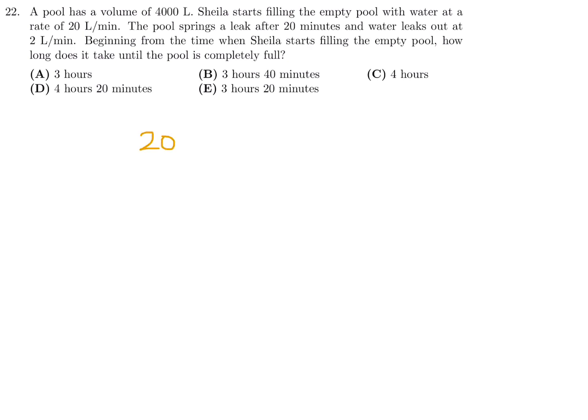The first 20 minutes, it is 20 liters per minute, the filling rate. So that is obviously 400 liters. Then a leak springs up after this 20 minutes, causing a constant drain of 2 liters per minute. So now we are filling at 20 minus 2 liters per minute, because the leak will take away 2 liters every minute. We have to multiply this by a certain amount of time, and it has to equal the remaining amount. The pool is 4,000. We already put in 400. So we have to put in the remainder, which is 4,000 minus 400.